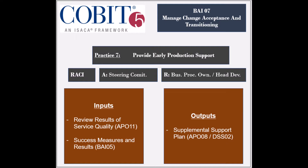The entity that is held accountable is the program steering committee. The practice receives two inputs which are the quality of service review results from the APO-11 process, and the success measures and results from the BAI-5 process. It generates one output which is the supplemental support plan, to be used by the APO-8 and DSS-2 processes.